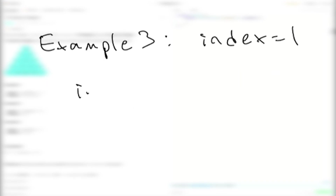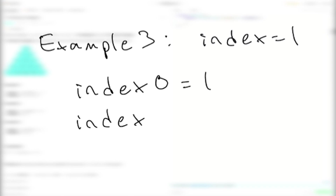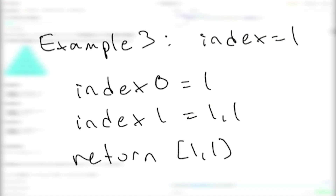For example 2 we're given index equal to 0. This one is obviously pretty easy — it just returns 1. For the last example we're given index equal to 1. Index 0 is equal to 1 and index 1 is equal to 1, 1. So we return 1, 1.